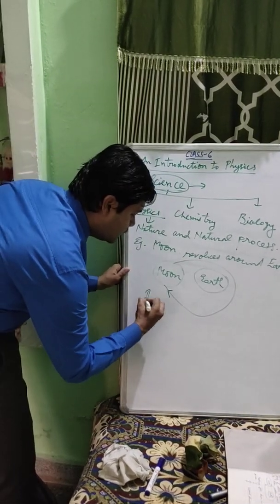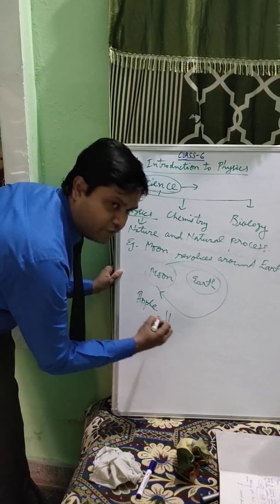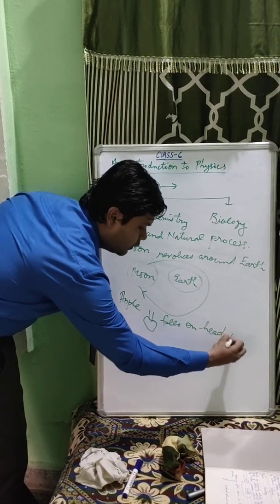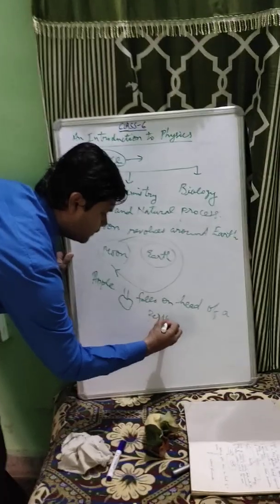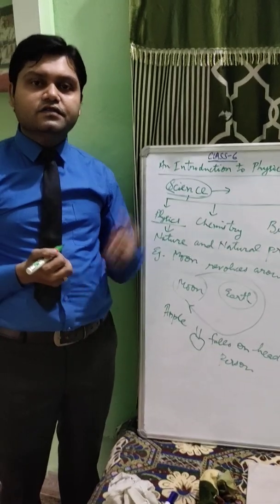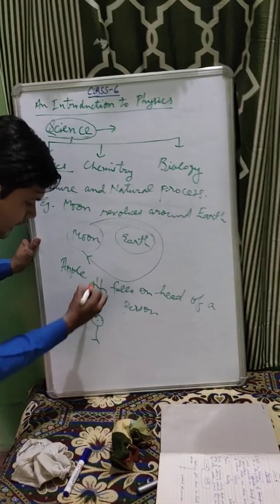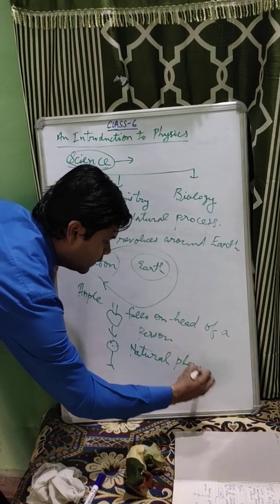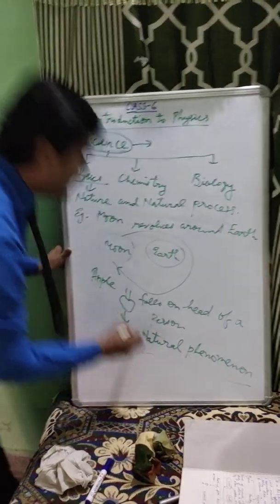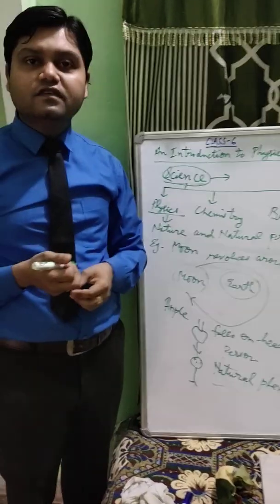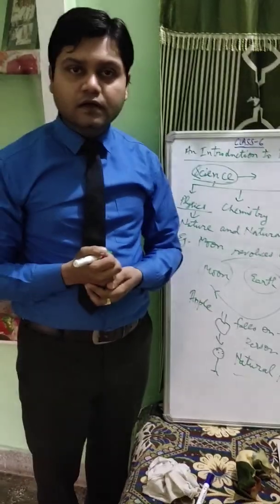As a second example, we can consider one apple. One apple falls on the head of a person. You might have seen a tree with a lot of apples and mangoes. Whenever an apple falls on a person, this is a Natural Phenomenon. And these things will come in the category of Physics. So, in this branch of science, we are going to study everything related to Nature and Natural Phenomena.